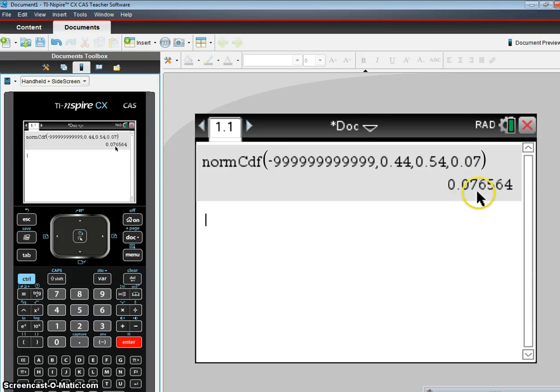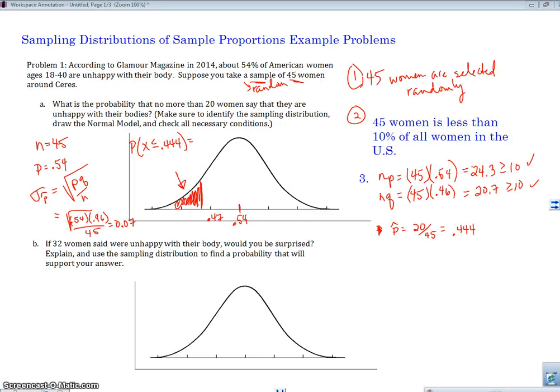And we get 0.077. So it turns out the answer to this problem is 0.077. So in context, 7.7% is the probability that no more than 20 women are going to say they're unhappy with their bodies in a sample of 45.